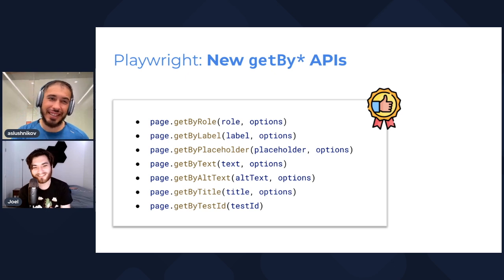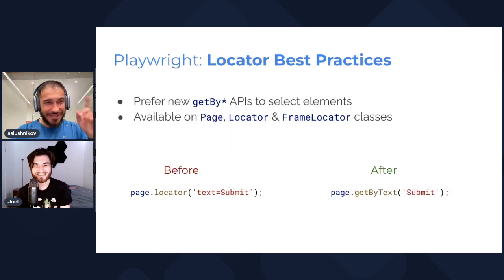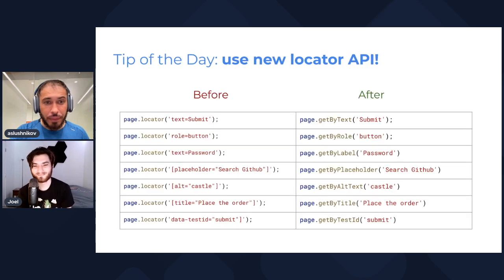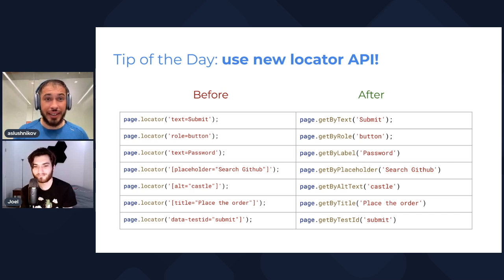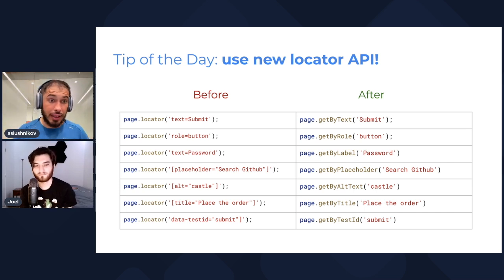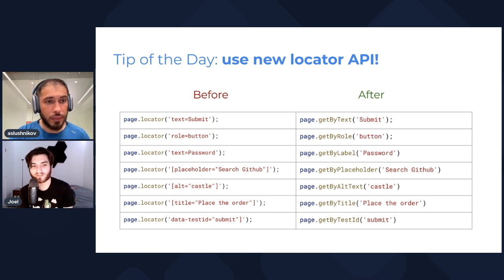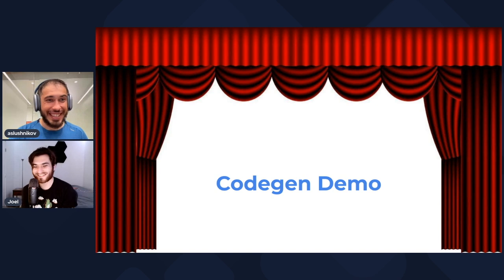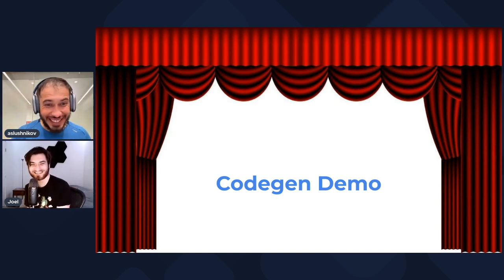Moving on — and this is the tip of the day for today's video: use the migration guide to learn how to use the new API methods, and try to use them in all new tests you author. Maybe migrate some old ones too. Does Codegen use these? — You're getting a little ahead of yourself there! Yes — you get a bonus point. Let me actually show you the demo.